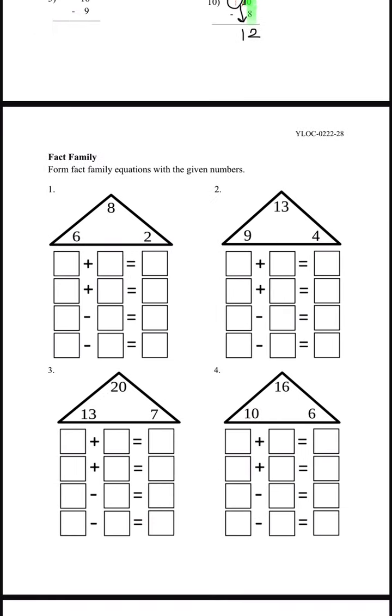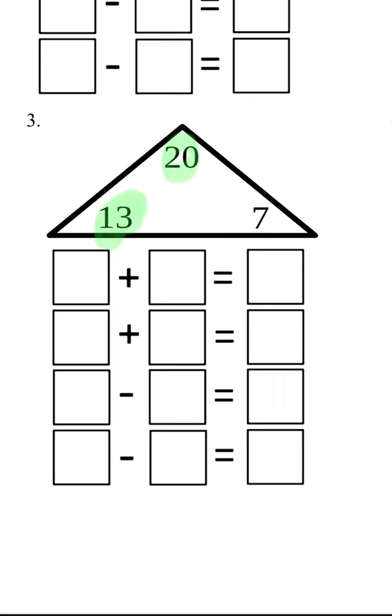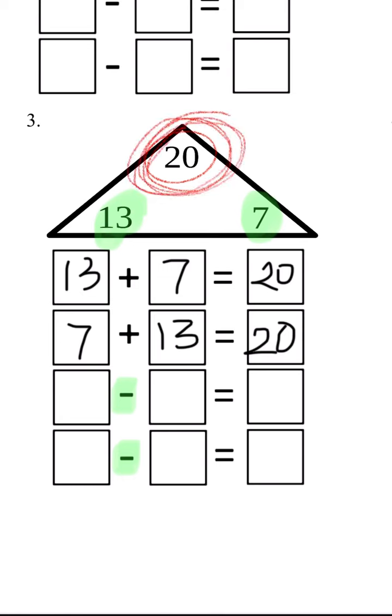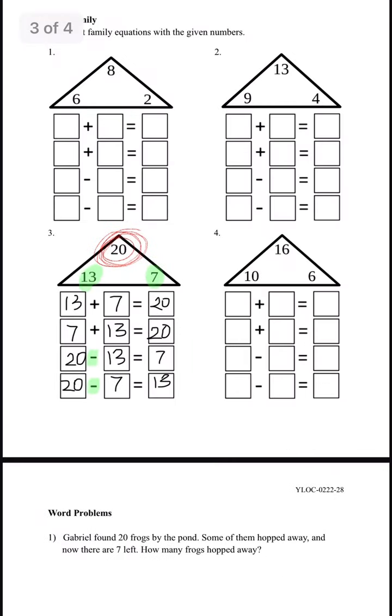Fact family. Form fact family equations with the given numbers. Let's try number 3. We have 13, 20 as our biggest number, and 7. So we start with adding our two small numbers. 13 plus 7 equals 20. Or it could be 7 plus 13, that's also 20. With subtraction, we're going to have to put our biggest number first. So 20 minus 13 equals 7, and 20 minus 7 equals 13. We do the same thing for the rest of the questions.